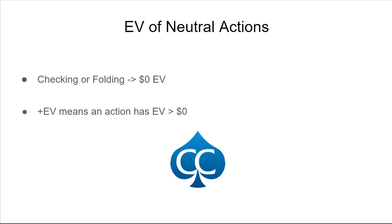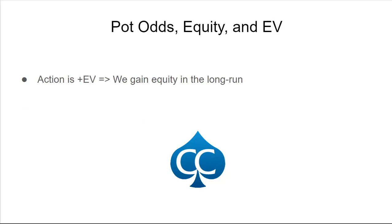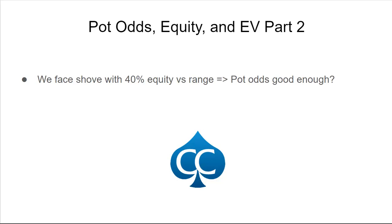We talked in the last video about plus EV. Plus EV just means an action has EV greater than zero. Another way to look at it: an action is plus EV means that we gain equity in the long run. Since expected value is money that we win or lose, equity is the money — so these are how these concepts relate.